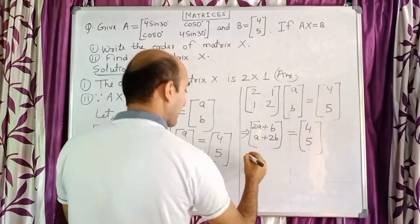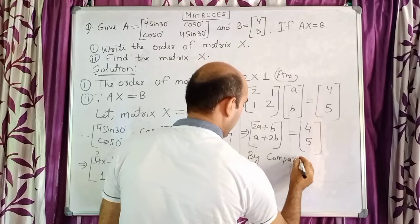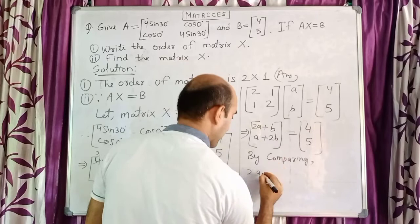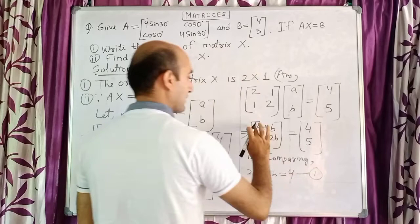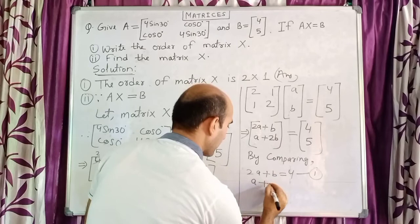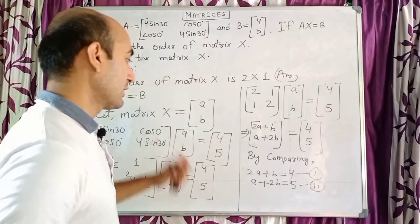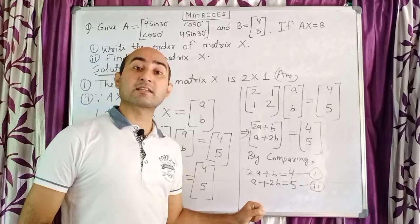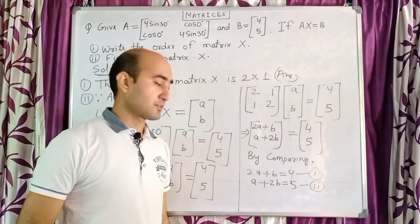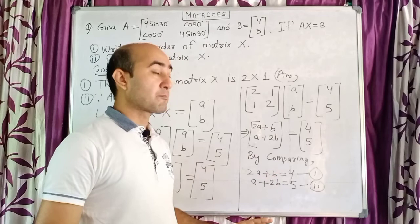Now compare the left-hand side with the right-hand side. By comparing we get: 2a + b = 4 (Equation 1) and a + 2b = 5 (Equation 2). This has become a simultaneous linear equation in two variables, which we have learned in class 8 and 9.